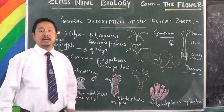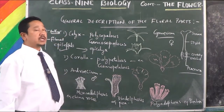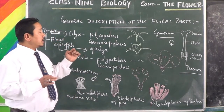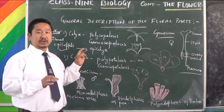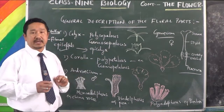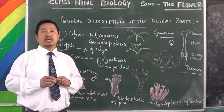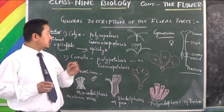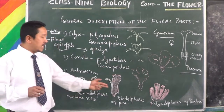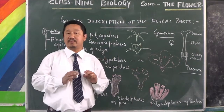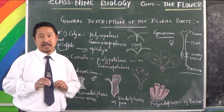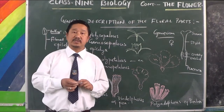So this is all about the parts of the flower and the new terms we have found here related to those parts. Like: what is bract? What is perianth? What is sepaloid perianth? What is petaloid perianth? What is polysepalous, gamosepalous, epicalyx, polypetalous, gamopetalous, monadelphous, diadelphous, polyadelphous? These are the new terms we have studied. Please memorize them with the help of your book. Thank you very much.